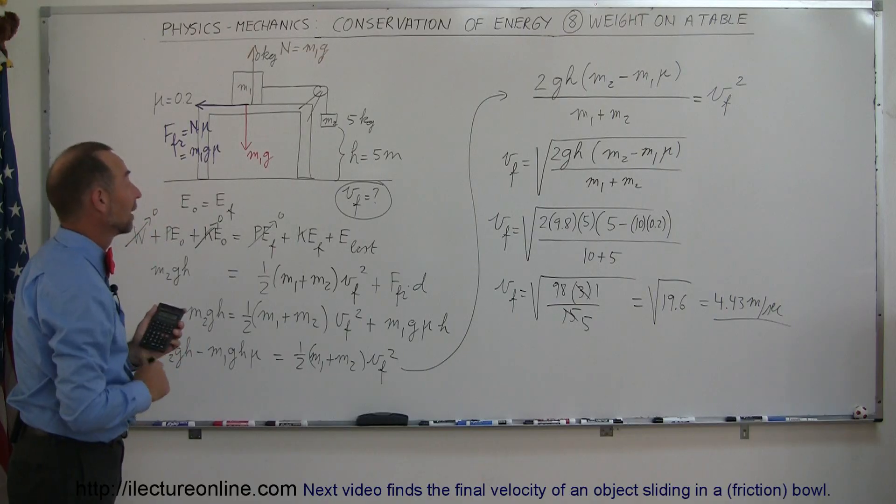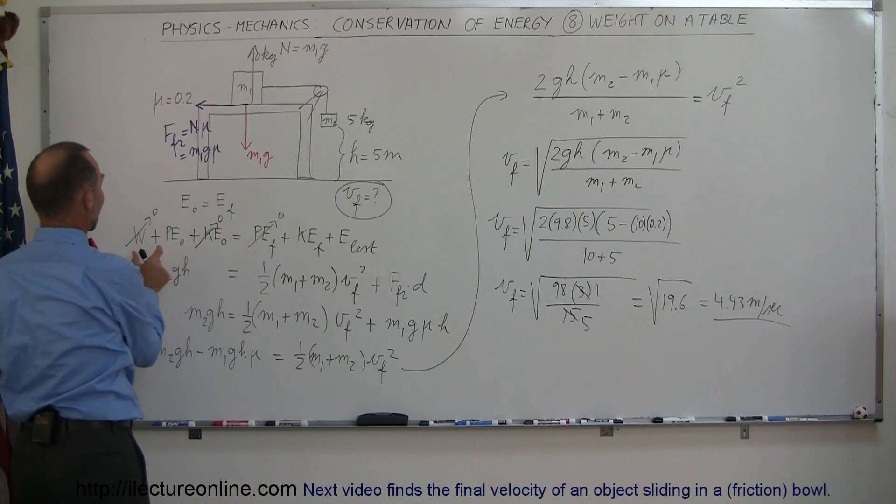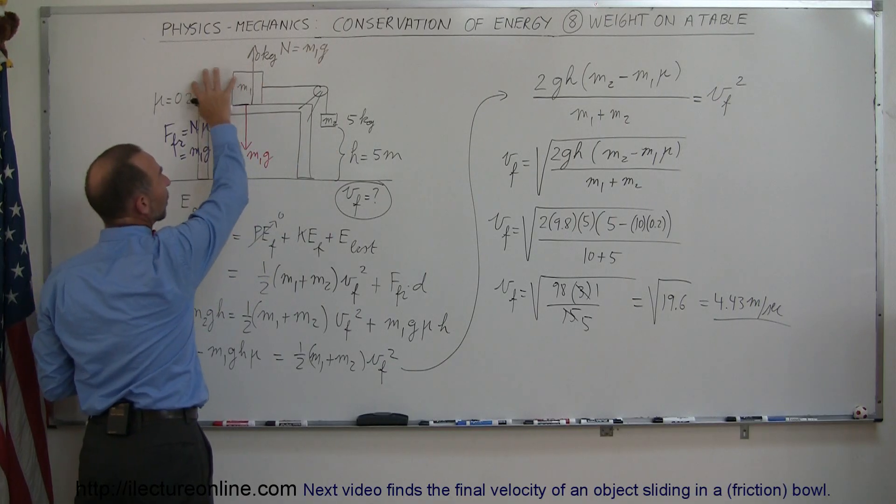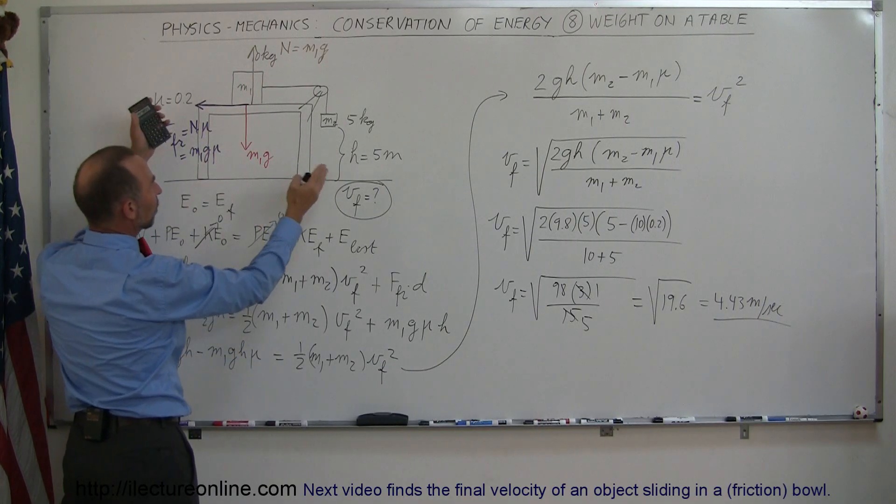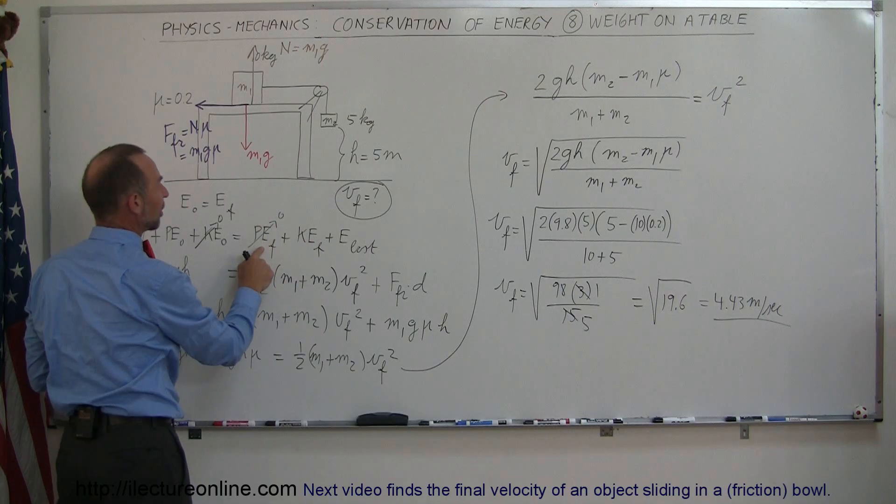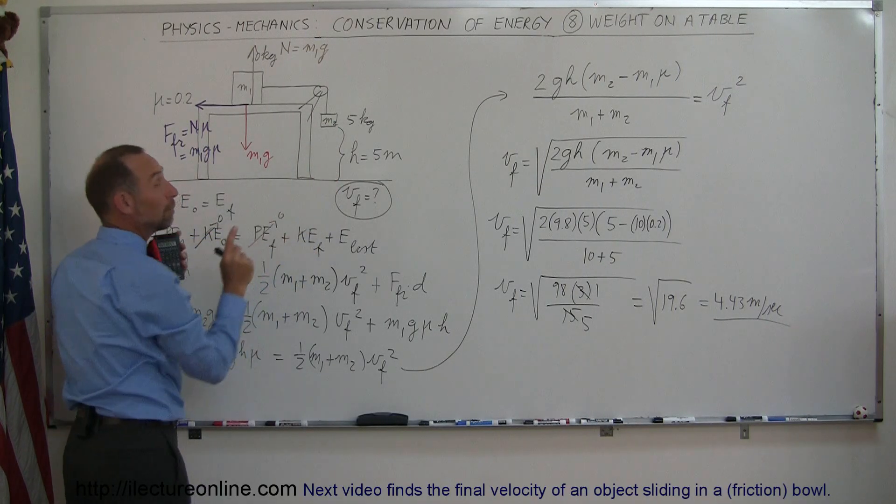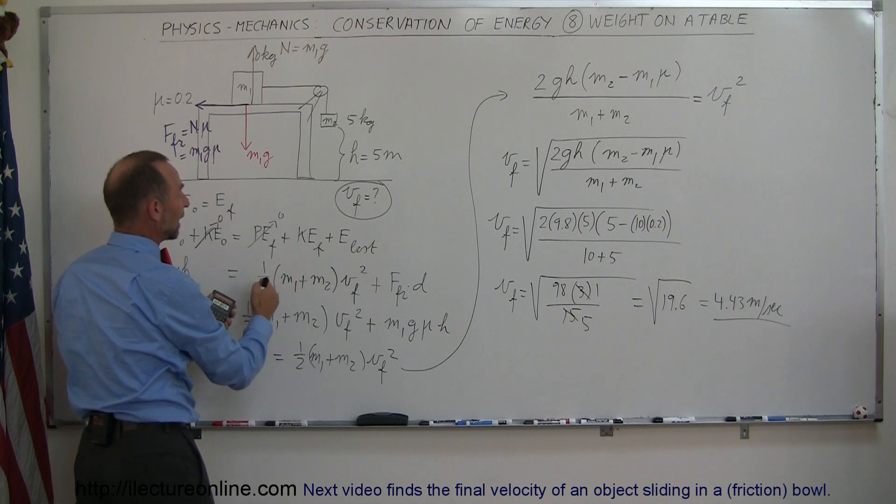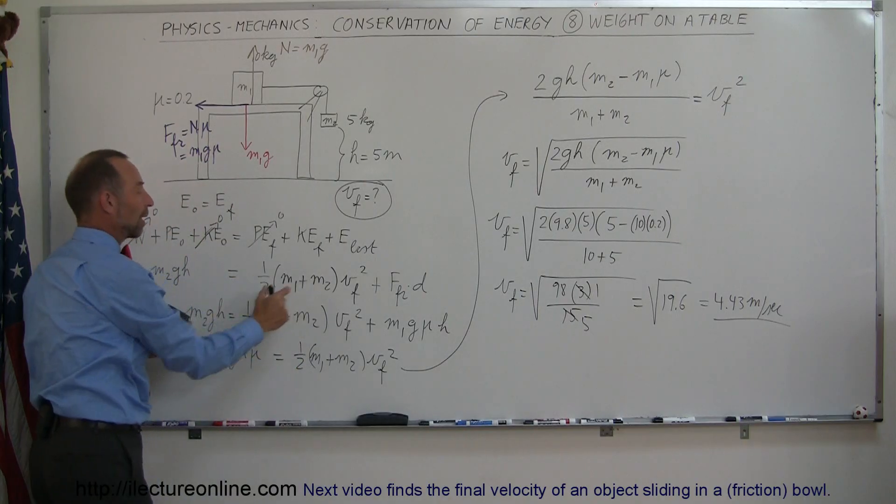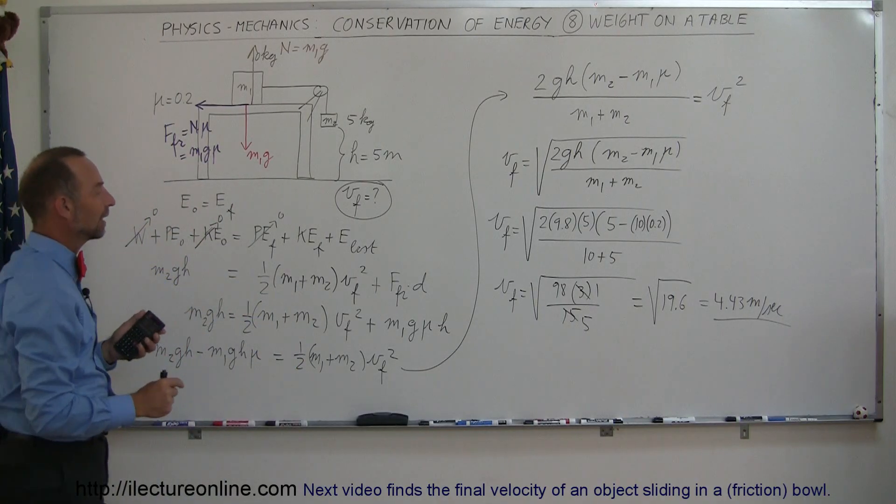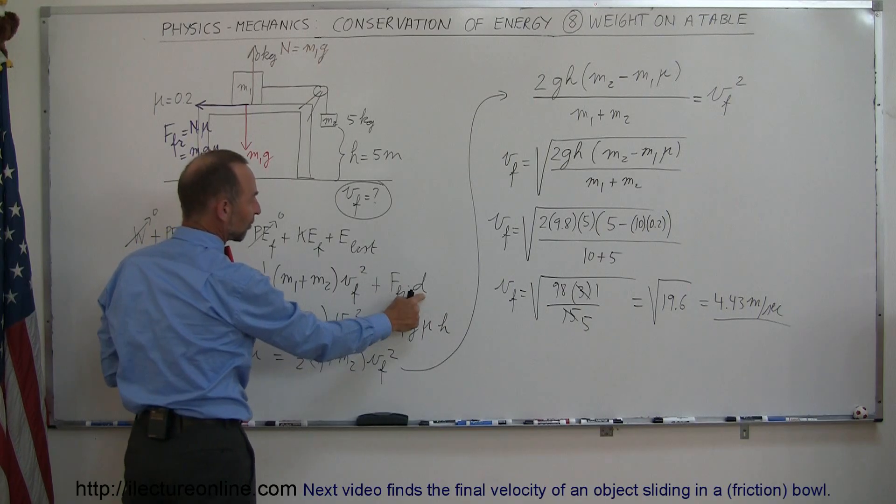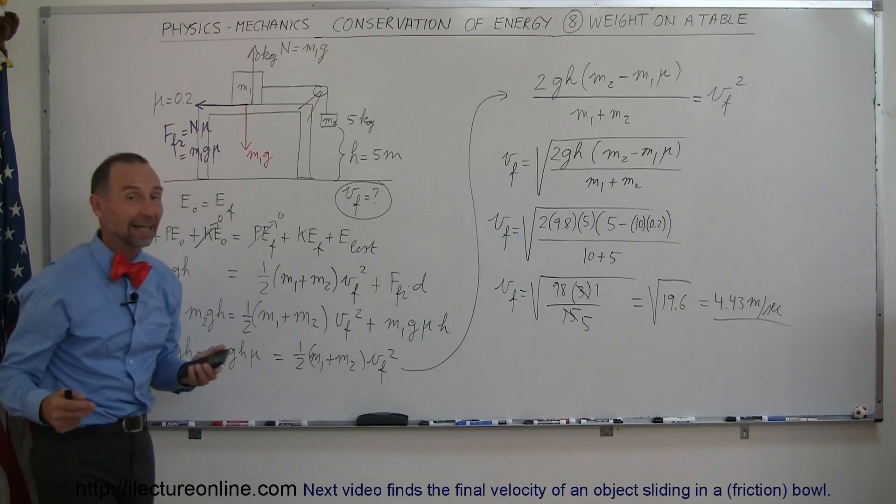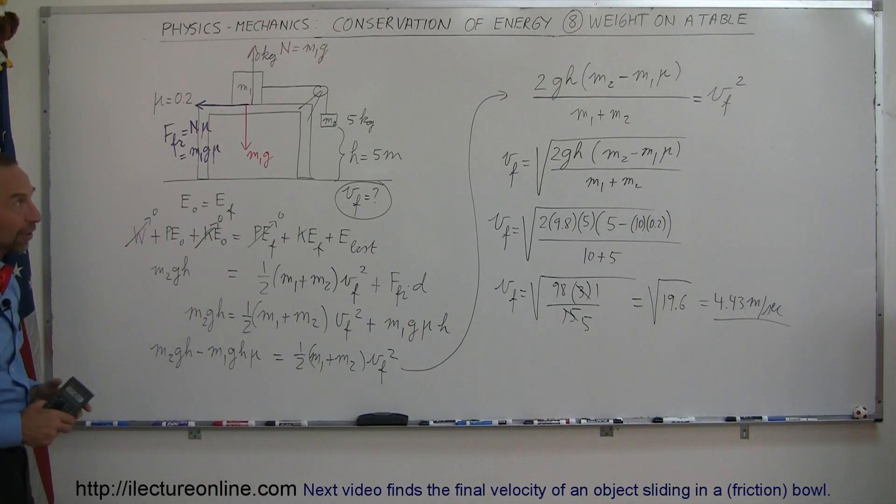So, quick review. Identify what we have. We had no work input. We had initial potential energy because of this mass. We ignored this one because it didn't change height. We had no kinetic energy because the block started from rest. The final potential energy is zero because this block is down on the ground. Both will be moving with the final velocity, and so we account for the 1/2 mv squared for the kinetic energy. Of course you have to add both masses. And then finally we lose energy because we have the friction force times distance, and the friction force is m1g mu, and the distance of course is the same as the height that the block falls. And that's how you do that problem.